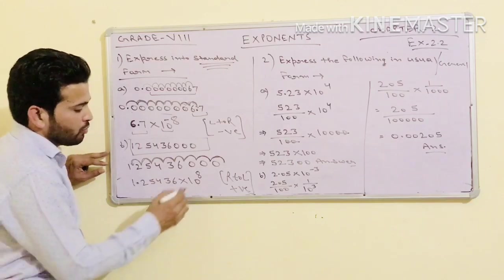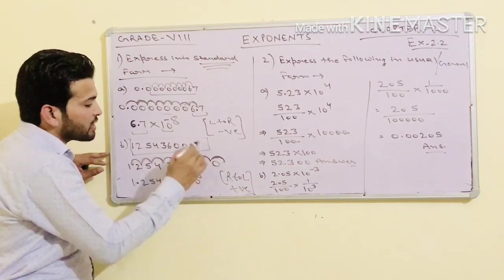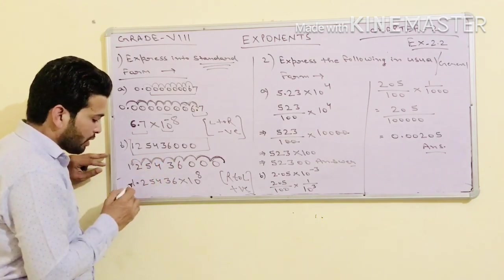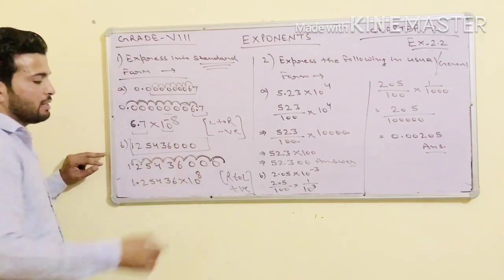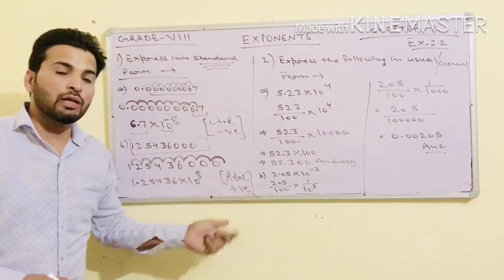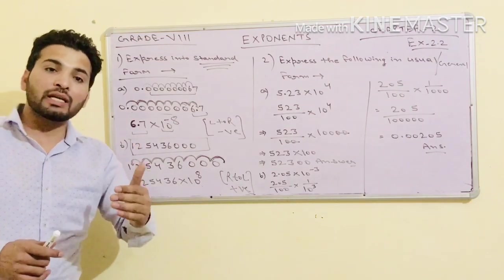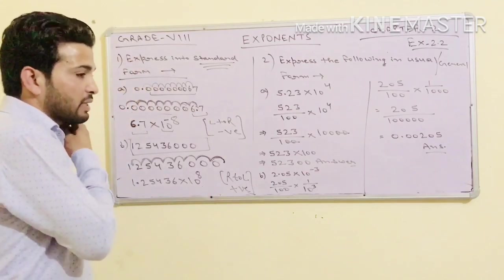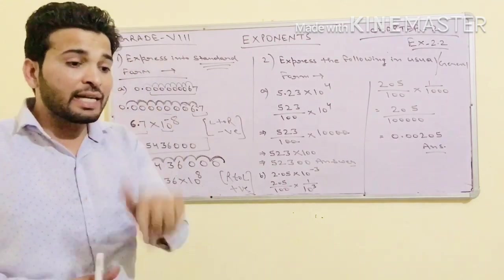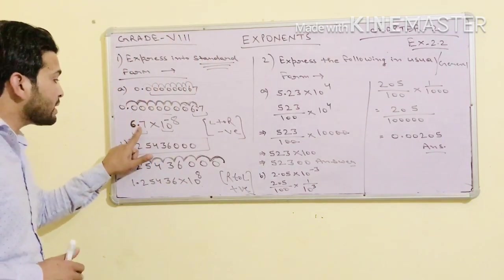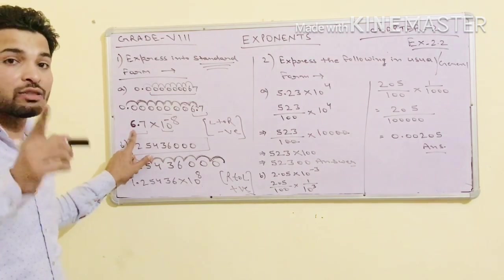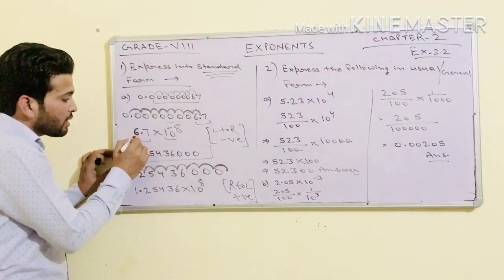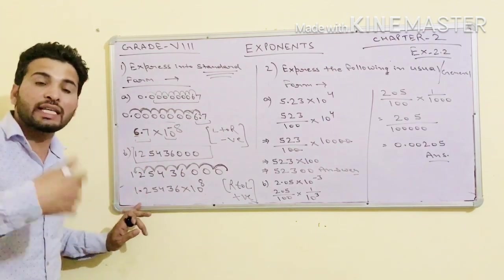So 1.25436 × 10 raised to power 8, because I am moving from right to left, so the sign is positive. One rule to remember: in scientific notation, before the decimal point there is only one digit, and that digit must be more than zero and less than ten.